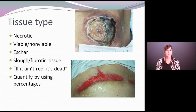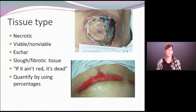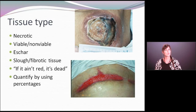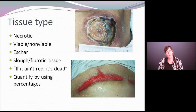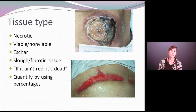In addition to tissue type, we also need to look at what kind of tissue we have in the wound. Do we have necrotic tissue? Do we have healthy tissue? It's very, very important to try to determine what type of tissue is in that wound. As I like to say, 'if it ain't red, it's dead.' What you're wanting to see in a wound is a nice, healthy, clean wound without the presence of necrotic tissue.